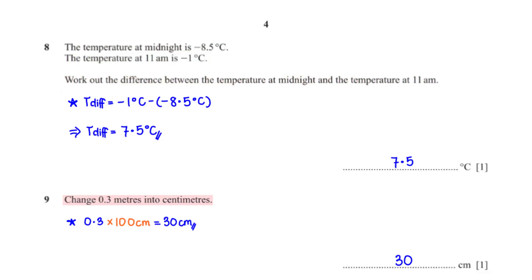Change 0.3 metres into centimetres. One metre is 100 centimetres, so to convert 0.3 metres to centimetres we multiply 0.3 by 100, which is equal to 30 centimetres.